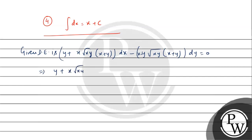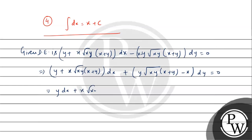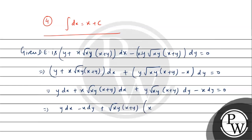We can see: (y + x√(xy)(x+y))dx + (−x√(xy)(x+y) − x)dy = 0. Opening this up: y·dx + x√(xy)(x+y)dx + y√(xy)(x+y)dy − x·dy = 0. Grouping: (y·dx − x·dy) + √(xy)(x+y)(x·dx + y·dy) = 0.